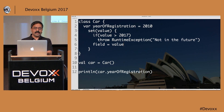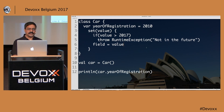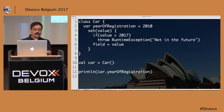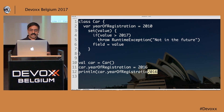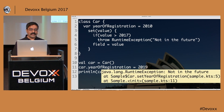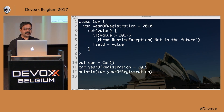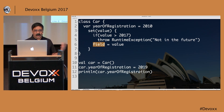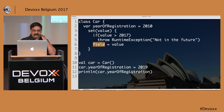Setting car.yearOfRegistration = 2016 works fine, but trying to set it to 2019 throws an exception because I can't really change it. Notice this is called 'field' — you don't get access to the direct field directly. This is similar to C#, but Kotlin does it a bit more elegantly using this thing called 'field', whereas C# requires an actual backing field name. You can also write a getter similarly.